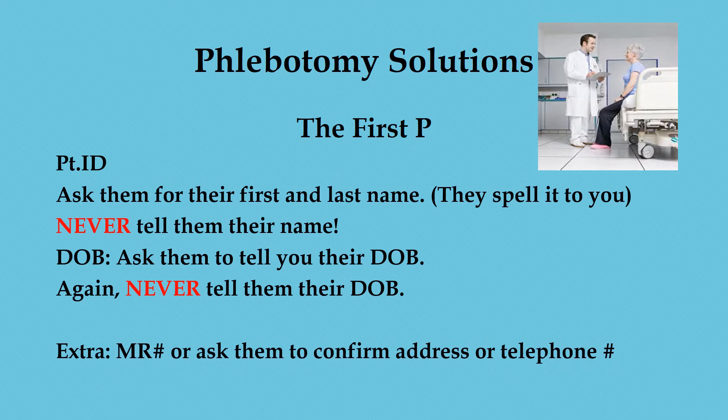We might also ask for extra information if needed — confirming the medical record number, address, or telephone number. Those are extra things that may be required by a lab. I always ask them to initial on the requisition sheet where their name and date of birth are, after I've confirmed it. I have them look at the paper, make sure everything's correct, and initial it — that way it protects me that they verified the information as well.